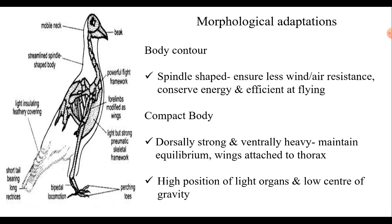The first and important morphological adaptation is body contour. Birds have a proper spindle-shaped body. Speed is a must for birds for any aerial life, so to minimize the resistance offered by air during flight, the body of birds is fusiform or spindle-shaped, lacking extra projections. This spindle-shaped body ensures less air resistance, like fish in water.